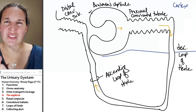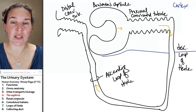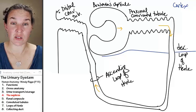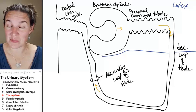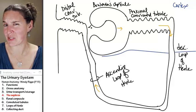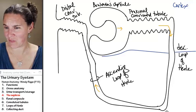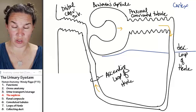The distal convoluted tubule, it's a little unfortunate that they use distal and proximal because they have nothing to do with limbs. Proximal close to Bowman's capsule, distal farther away from it if you follow the tube route.